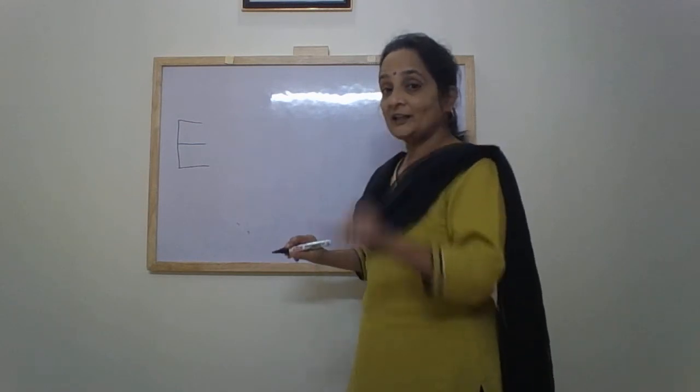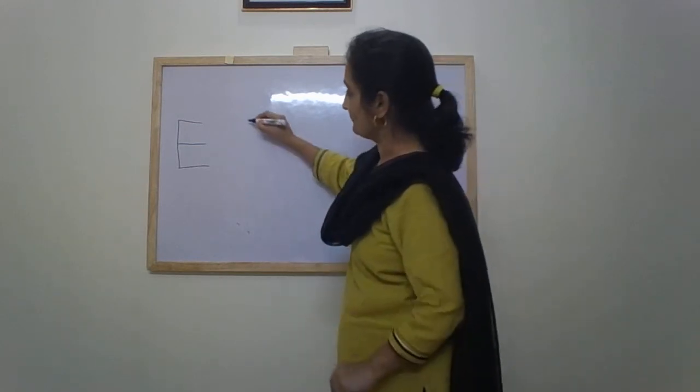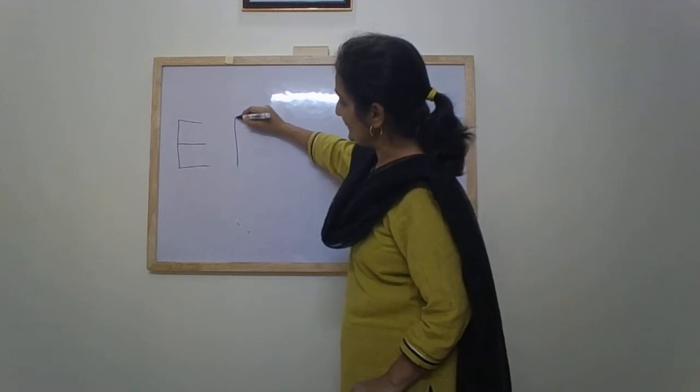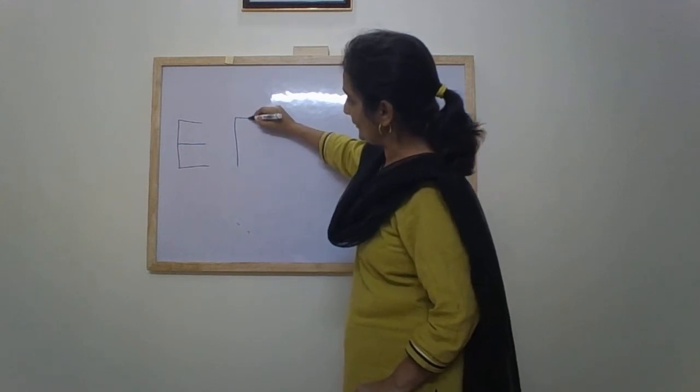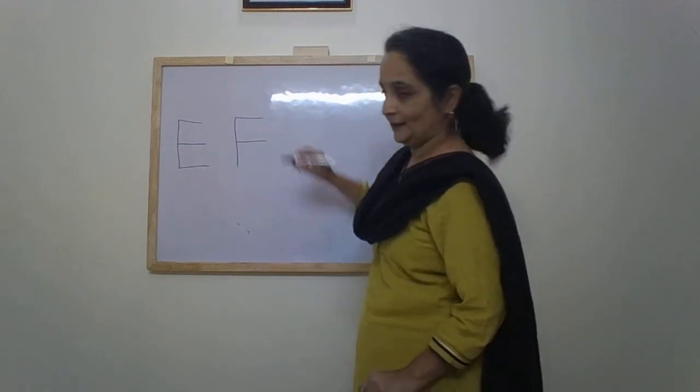After E comes F. Standing line, sleeping line on top, sleeping line in the middle — F.